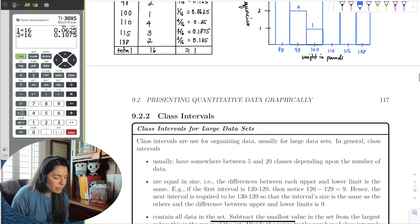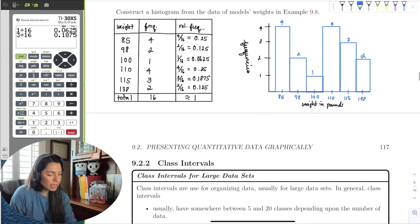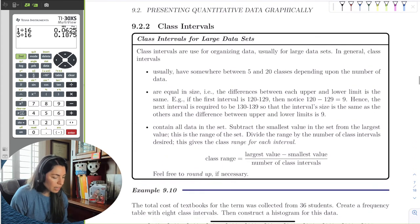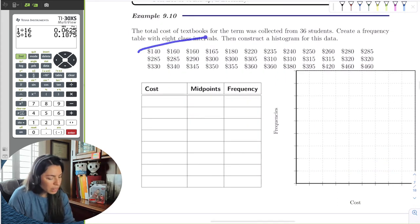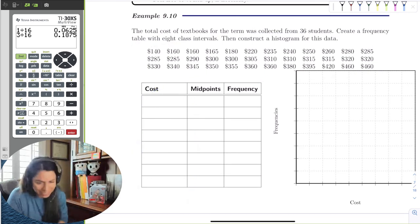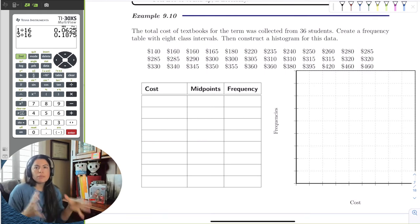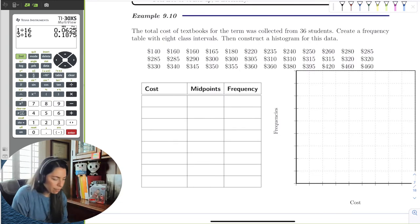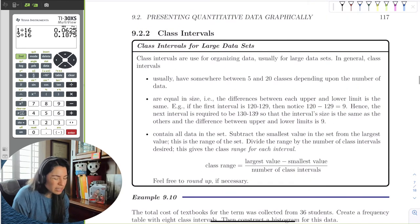The next part is going to be grouped data. So notice in this table, we just listed the pieces of data. But in this next section, we're going to see that we have a lot of data. We have 36 students. We're not going to draw a column of 36 pieces. We're going to group them together. And so grouping them together just minimizes the amount of data we're looking at on a table.